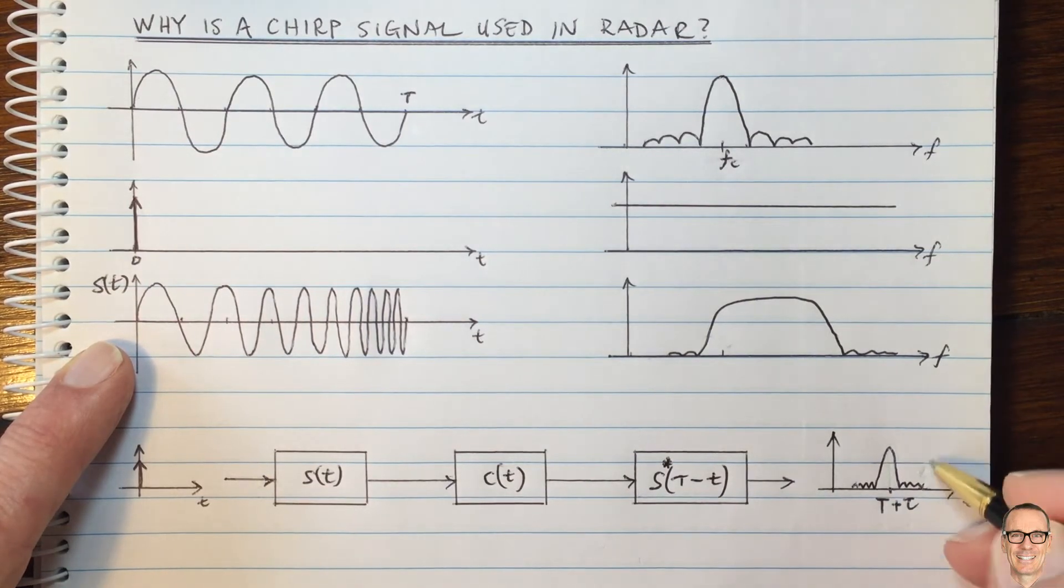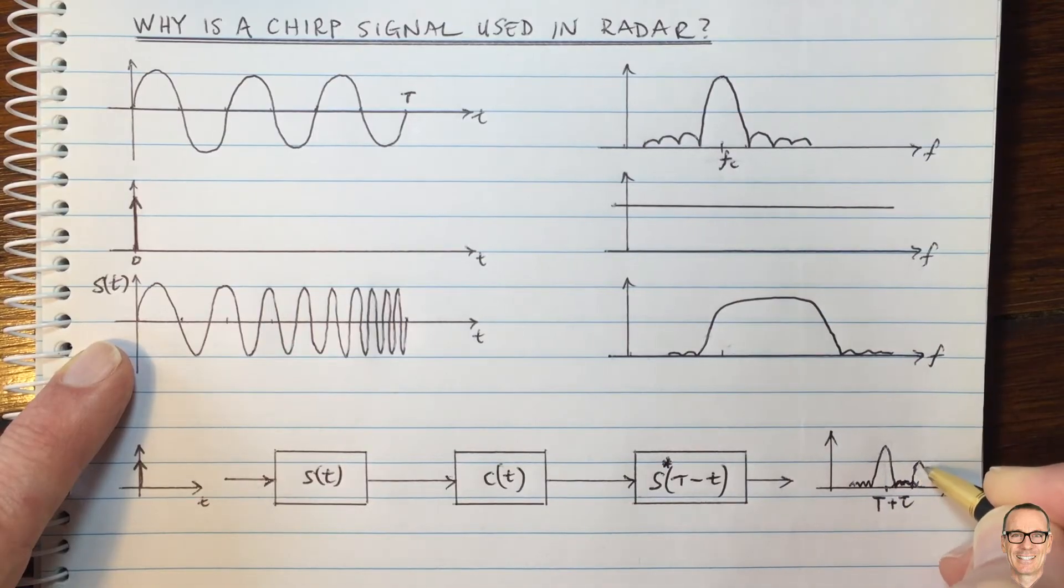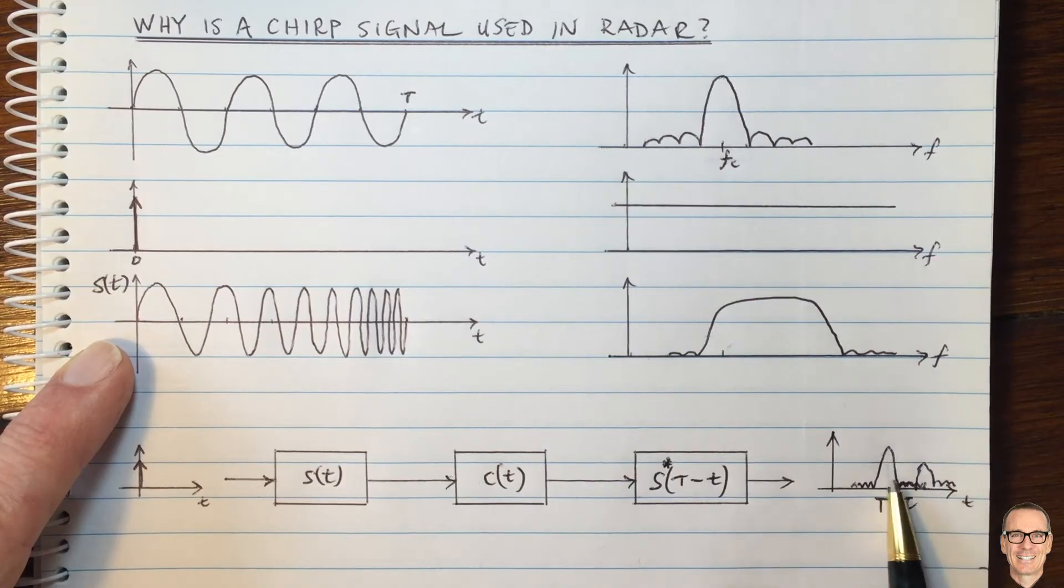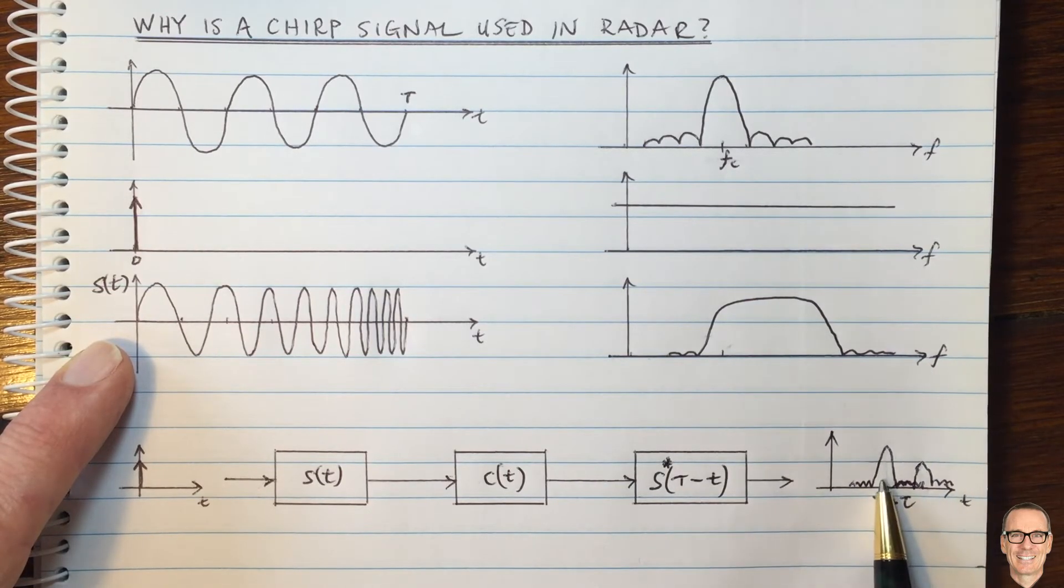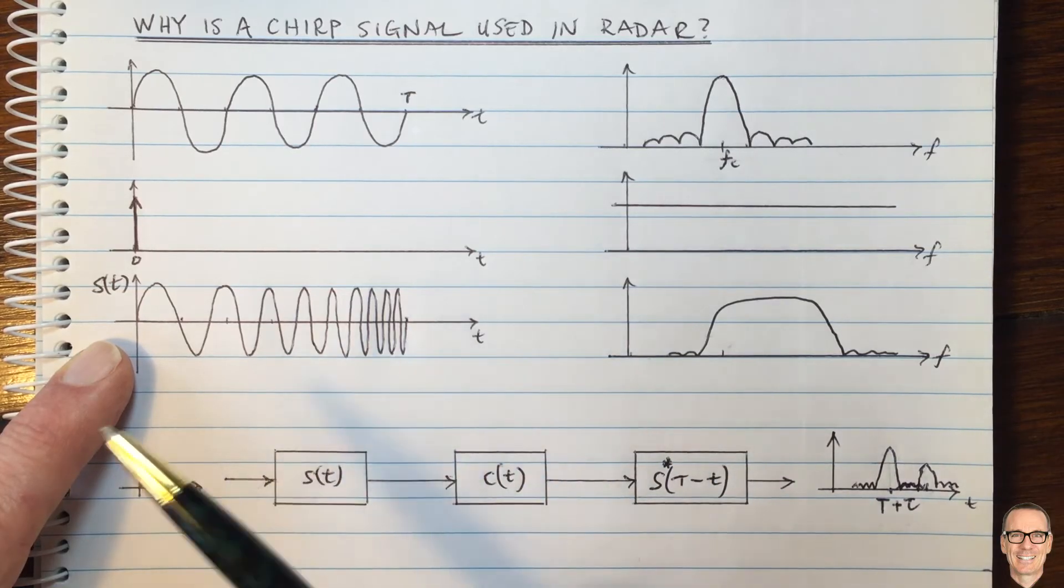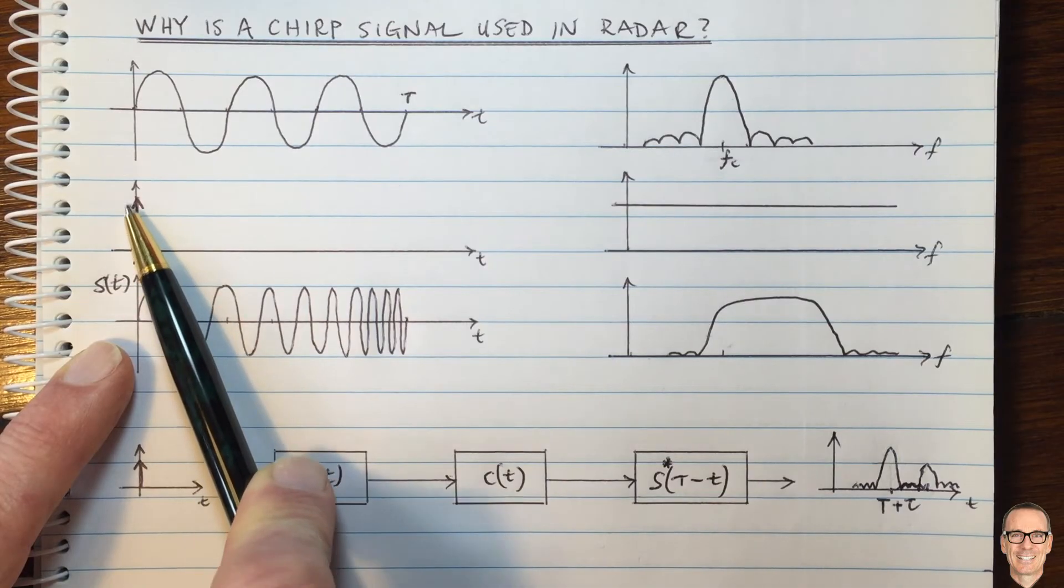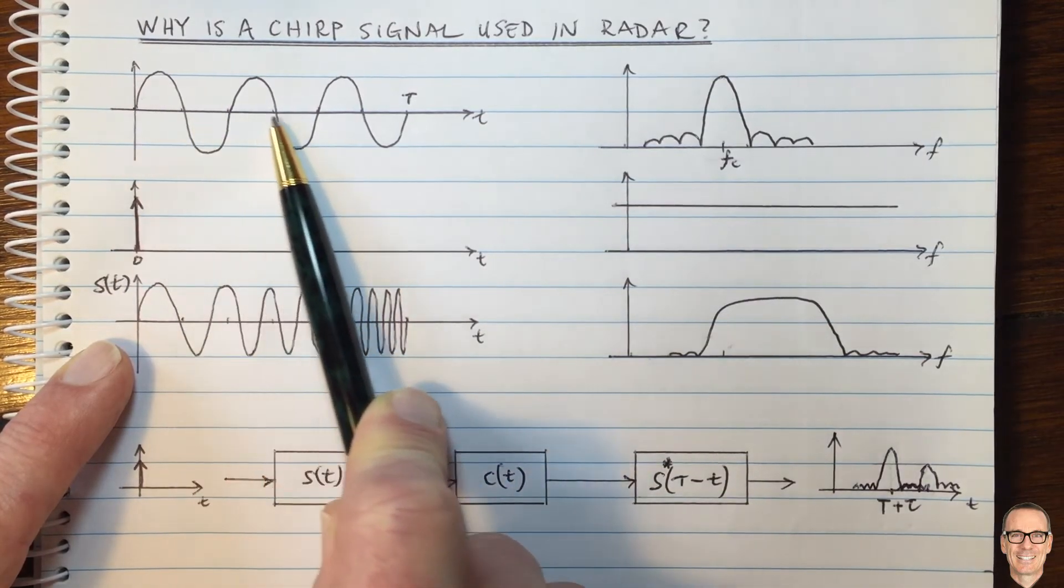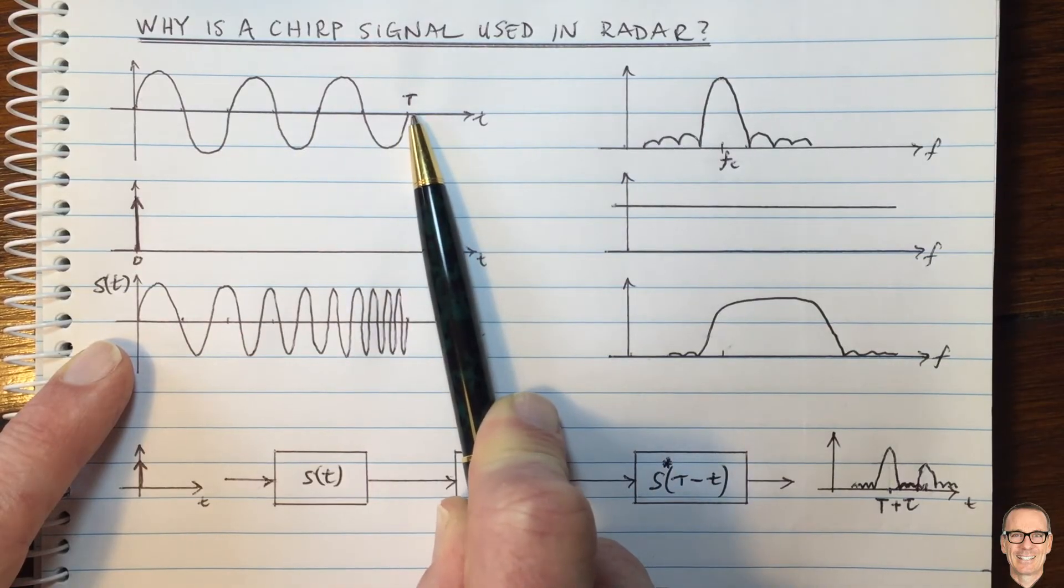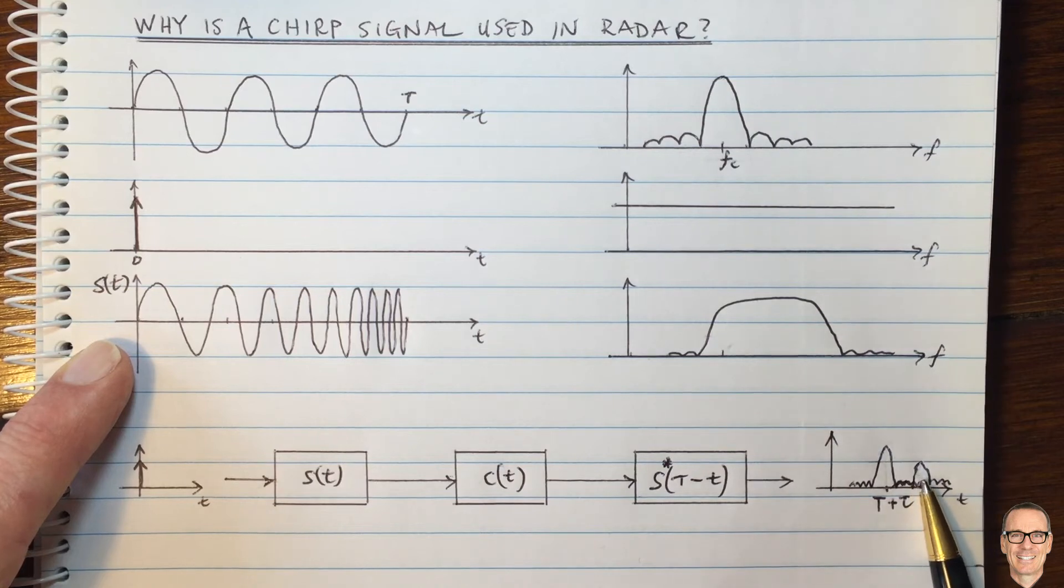And of course, if there's another target nearby, the other target will be being received, maybe one with a smaller return, will be received at a later delay, and you'll be able to separate out those two targets. So this function here is giving you a trade-off between the ideal case of an impulse, which has unrealistic dynamic range, and the other case of a pulse, simply of a sine wave, where it's very difficult to distinguish the different targets.